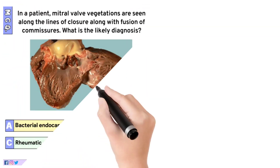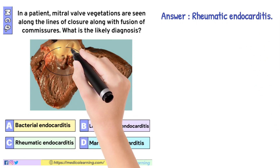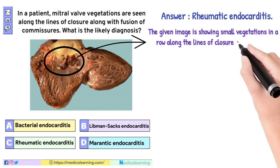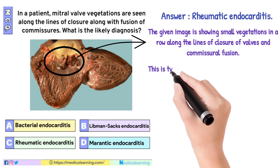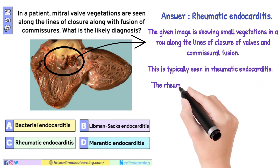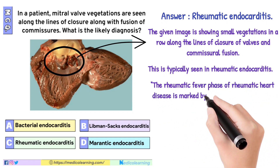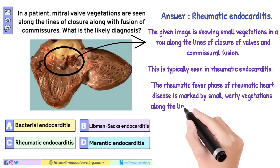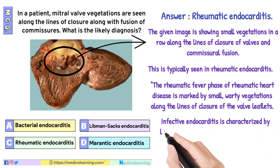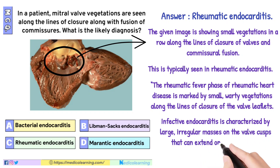In this question, the answer is rheumatic endocarditis. The given image shows small vegetations in a row along the lines of closure of valves and commissural fusion, which is typically seen in rheumatic endocarditis. The rheumatic fever phase is marked by small, warty vegetations along the lines of closure of the valve leaflets. Infective endocarditis, by contrast, is characterized by large, irregular masses on the valve cusps that can extend onto the chordae.